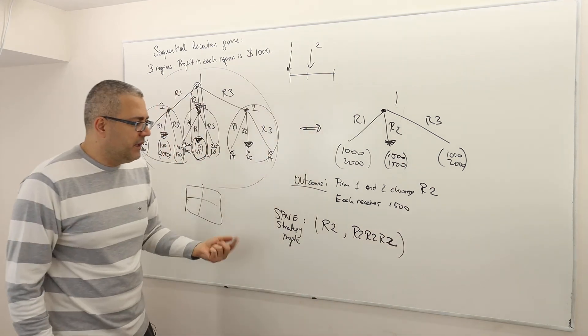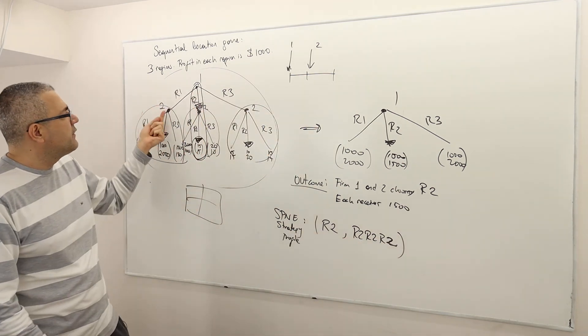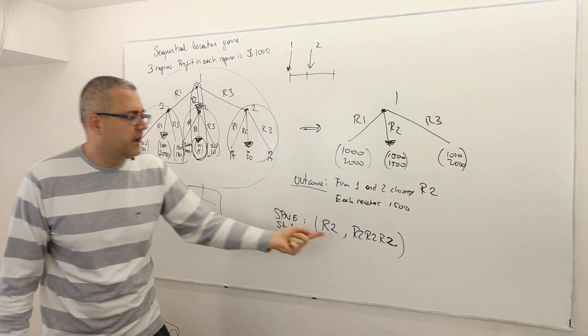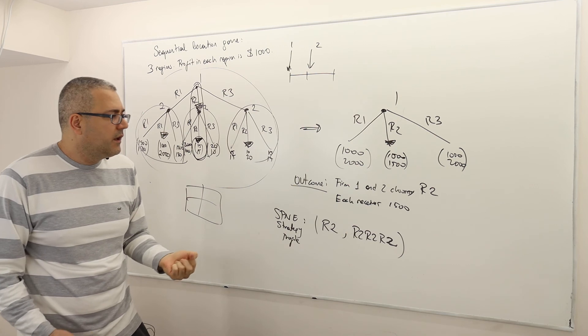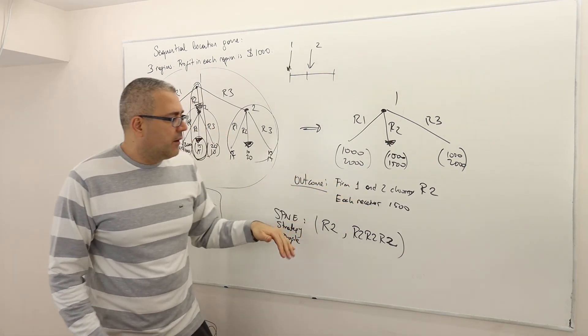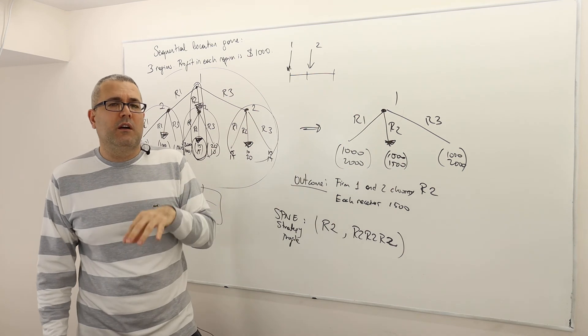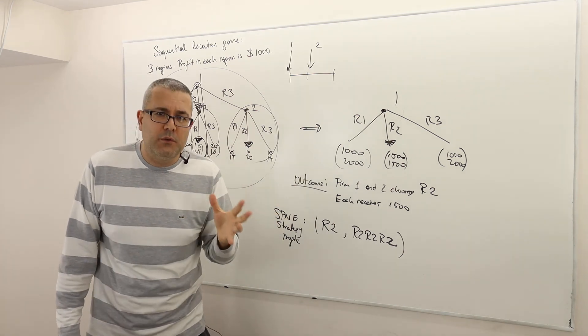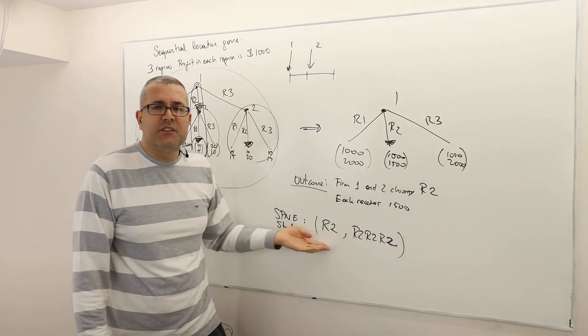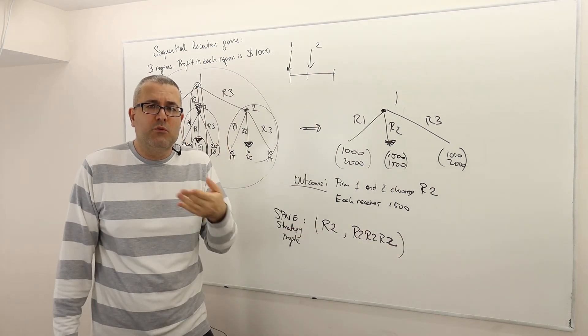What does that mean? That means that basically says player two is going to play R2 here, also R2 here, and also R2. This is why I have three R2s. So you may say when you describe the outcome, firm one is going to play R2, and firm two will always play R2, regardless of what player one does.